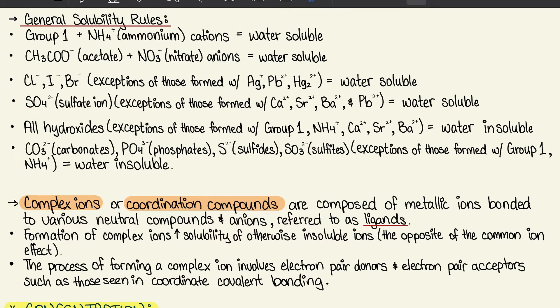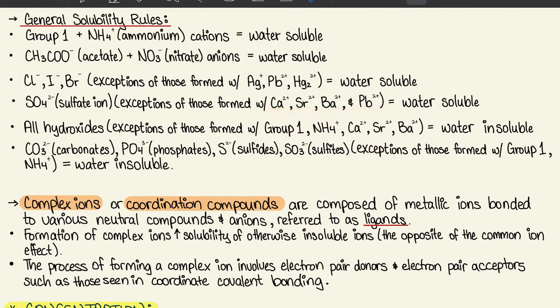The sulfate ion (SO₄²⁻) is water soluble with the exceptions of compounds formed with Ca²⁺, Sr²⁺, Ba²⁺, and Pb²⁺. For example, CaSO₄ would be an exception. Anything other than those combined with the sulfate ion is water soluble.